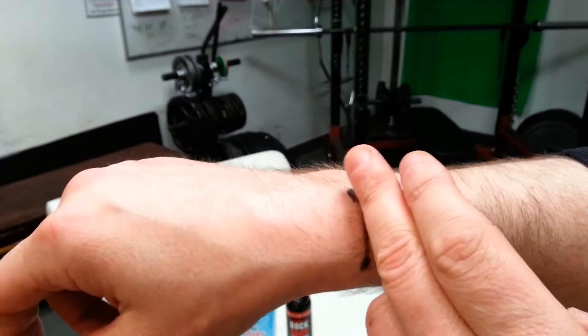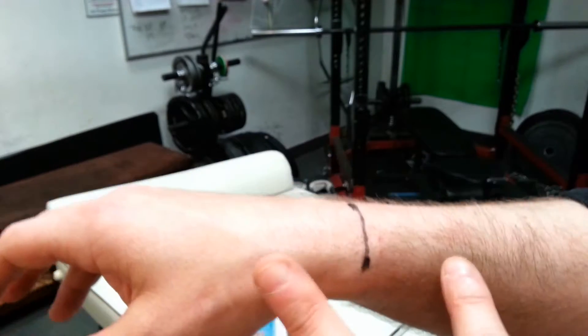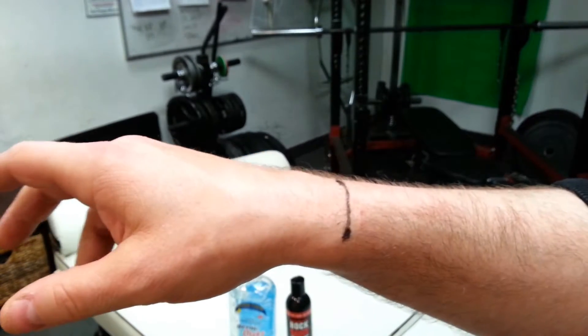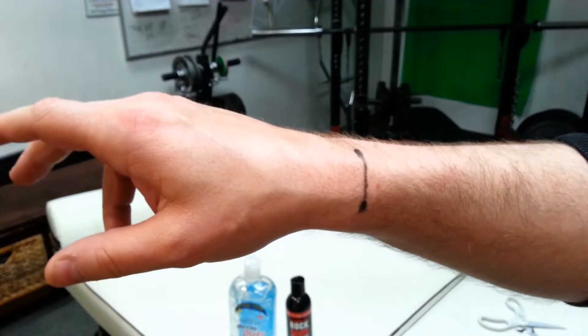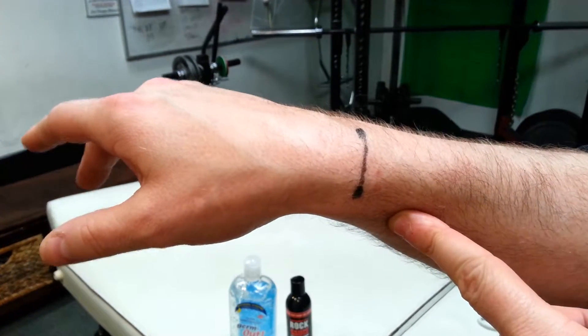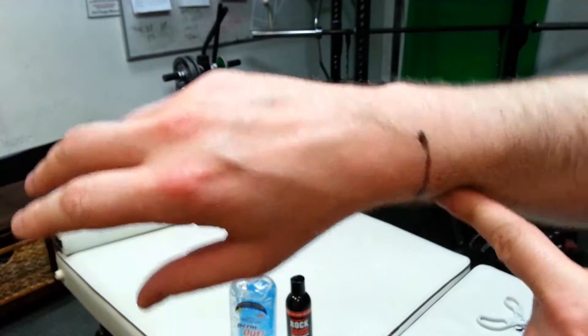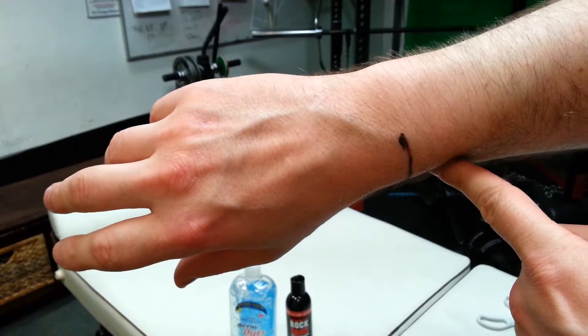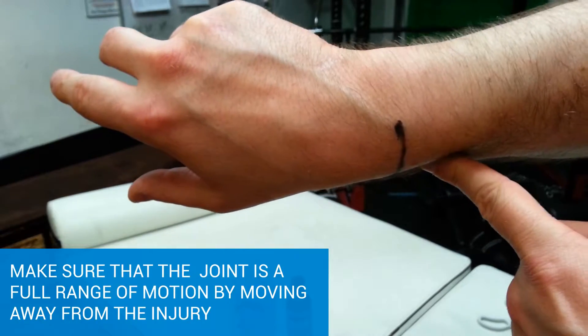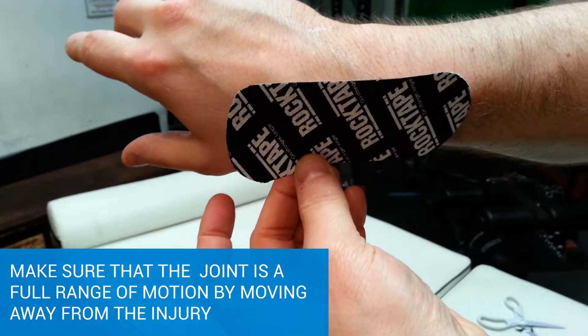My wrist right here with a nice little mark, I'm going to start putting my first strip. Now the first thing you need to understand is you need to have full mobility in your wrist. So make sure that you tape with full mobility. So in this case, even if you don't know your anatomy, go away from the joint as far as you can and that's pretty much how you're going to start taping.